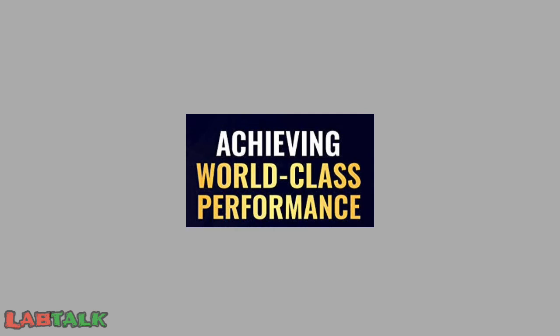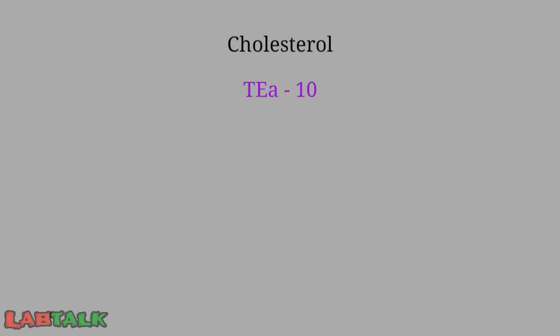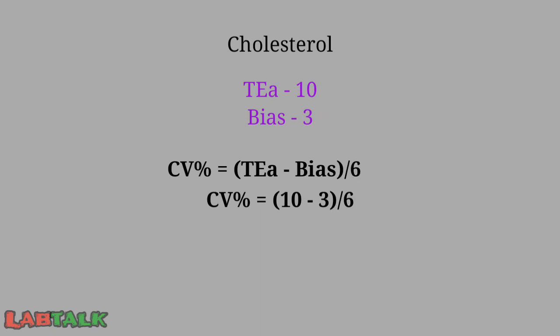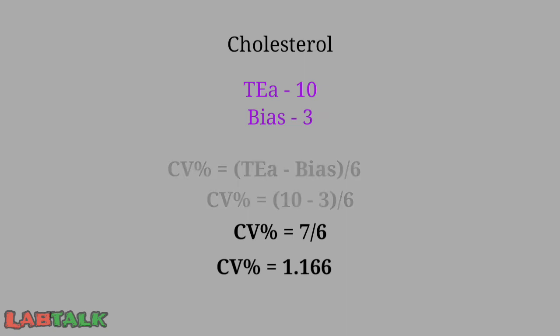Let us work through an example to calculate the target CV percentage for a parameter for both industry standard and world class performance. Using cholesterol as the example: Total Allowable Error = 10, Bias = 3. The target CV% for world class (6 sigma) performance = (10 − 3) / 6 = 7 / 6 = 1.17 CV%. This is the CV percentage for cholesterol that the laboratory must achieve to maintain 6 sigma world class performance.